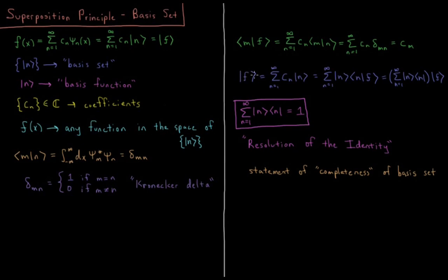The function f is again the sum from n equals 1 to infinity of c_n times basis function n. We just saw that c_n equals the integral from minus infinity to infinity of psi star_n times f. Substituting this in gives us the sum from n equals 1 to infinity of basis function n times the overlap integral of n with f. We notice that we can factor this such that we have it acting as an operator on the function f, since all of this sum is just something multiplying f.